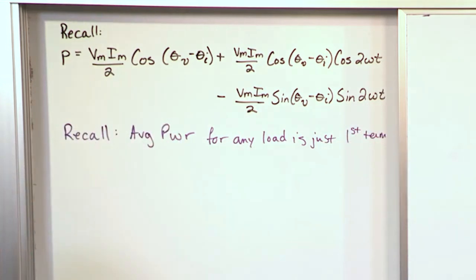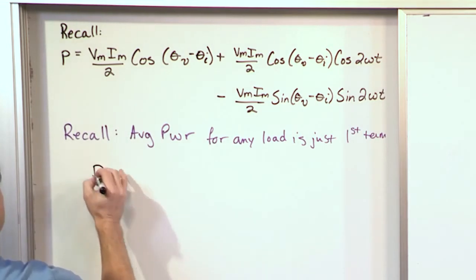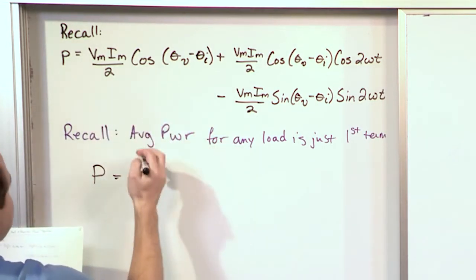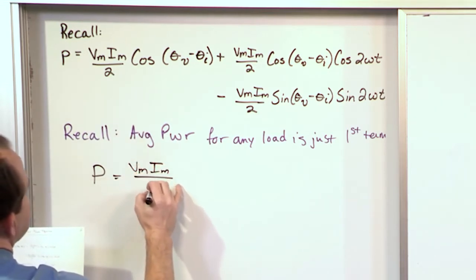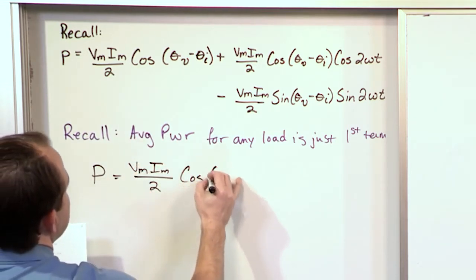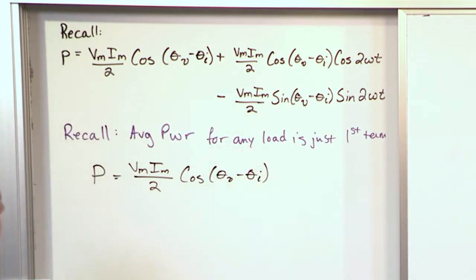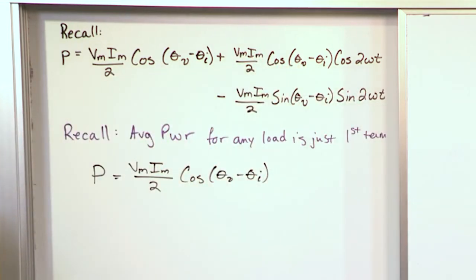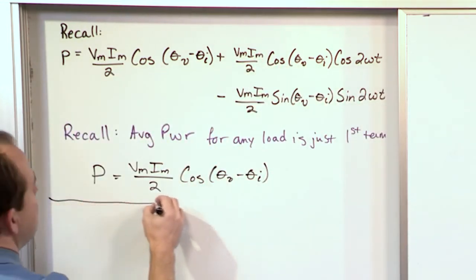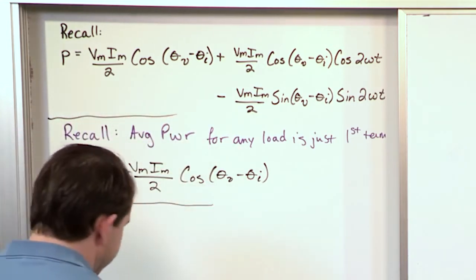We called that capital P. It's equal to the first term: V_m times I_m, the amplitudes multiplied together, divided by two, times cosine of θ_v minus θ_i. This is something we talked about before. If we average this over a period, these terms drop away and we're only left with this. This is what we call the average power. We're going to use this in a second, which is why I'm defining it again for you.